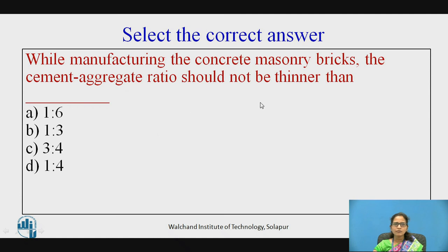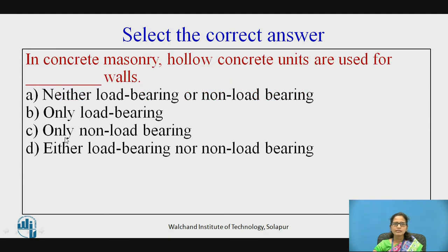Here are the MCQs. While manufacturing concrete masonry bricks, the cement aggregate ratio should not be thinner than: (1) 1:6, (2) 1:3, (3) 3:4, (4) 1:4. The right answer is 1:6. Next: in concrete masonry, hollow concrete units are used for which walls? Options: neither load bearing nor non-load bearing, only load bearing, only non-load bearing, or either load bearing or non-load bearing. The right answer is that they are used for either load bearing or non-load bearing walls.